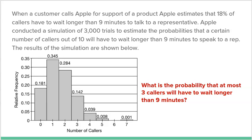Before we dive into the results of the simulation, I want to make sure you understand what Apple did. They know, based on years of getting phone calls, that 18% of customers will wait longer than nine minutes. So the probability that any one customer has to wait longer than nine minutes is 18%.